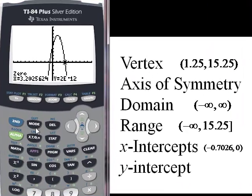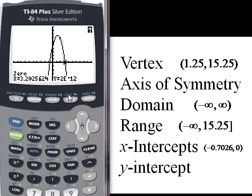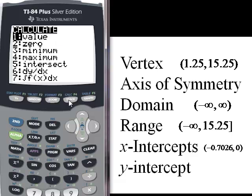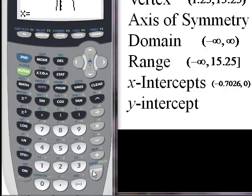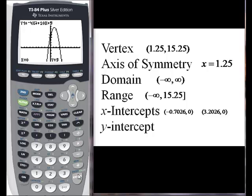The last thing we'll find is the y intercept. Now because of the way the quadratic was written, it's just the constant term. But if we ever wanted to find it using the graphing calculator, we can do second calculate value, which is the very first selection. The y intercept is the output when the input is zero. And we get nine. So our y intercept is the point zero, nine. So that's how we can find all the characteristics using a graphing calculator.